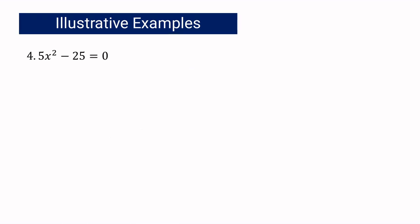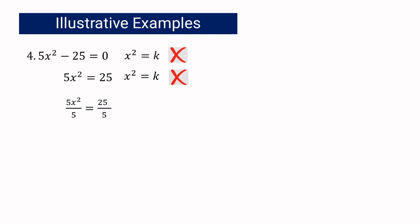Let us proceed to example number 4: 5x squared minus 25 equals 0. You need to identify if it is written in x squared equals k. It is not, because the constant term must be on the right side. We apply the addition property of equality, so it becomes 5x squared equals 25. It is still not in the correct form because the numerical coefficient of the quadratic term is 5; it should be 1. So we use the multiplication property of equality and divide both sides by 5, giving us x squared equals 5.